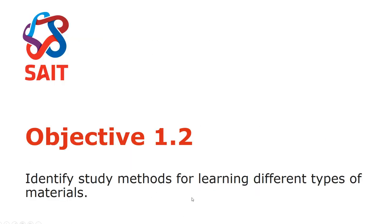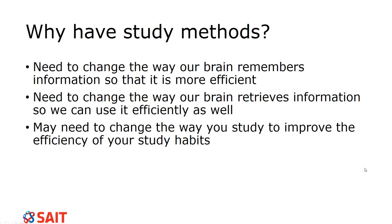Objective 1.2 is identifying study methods for learning different types of materials. We have to study because we need to change the way our brain remembers information so that it is more efficient. You'll often see people raise their eyes up when they're trying to remember — our brain retrieves information that way. We need to change how it retrieves and actually uses that information by changing the neural networks in our brain.